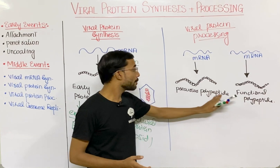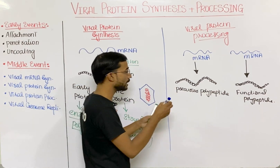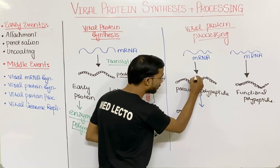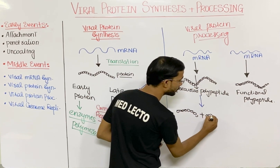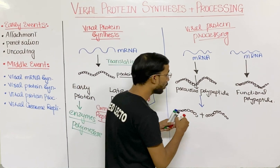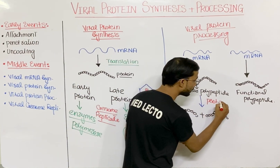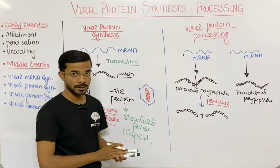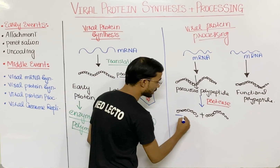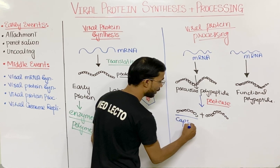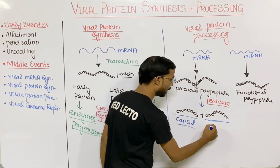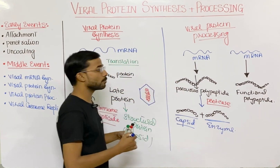In the case of the precursor polypeptide, it will first break into different components — for example, breaking from the center to become two components or two proteins — and after that they become functional. The most important thing here is protease: the protease enzyme actually breaks the precursor polypeptide, and after that the pieces become functional. These functional proteins are helpful in the formation of the capsid and in forming different enzymes.